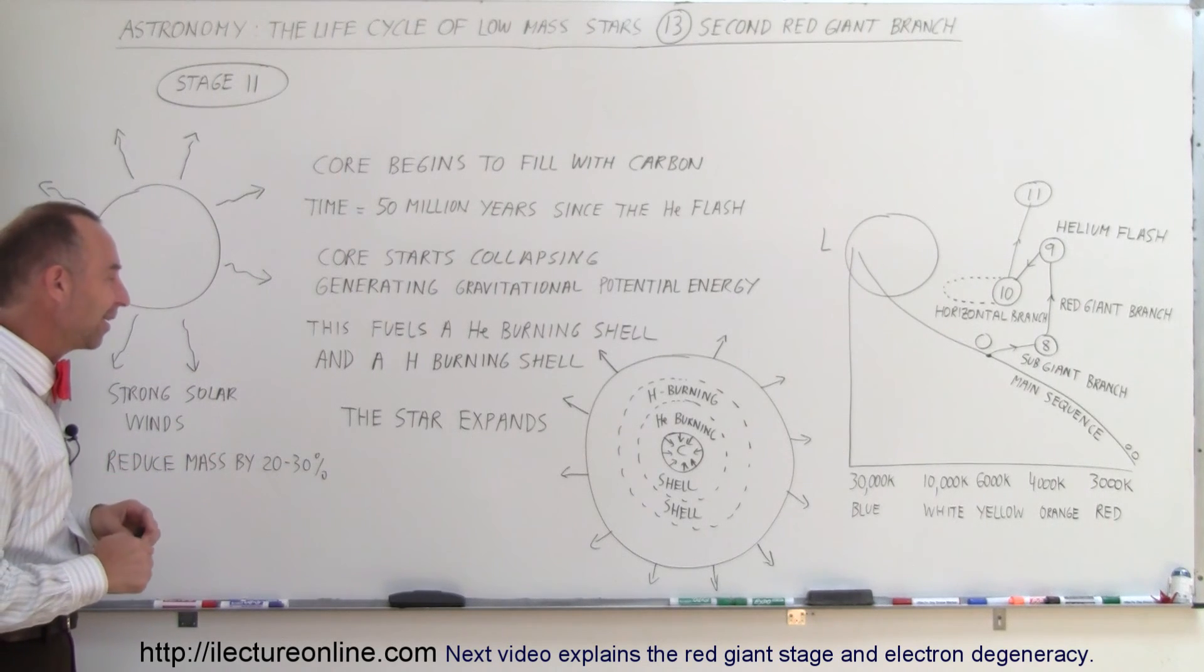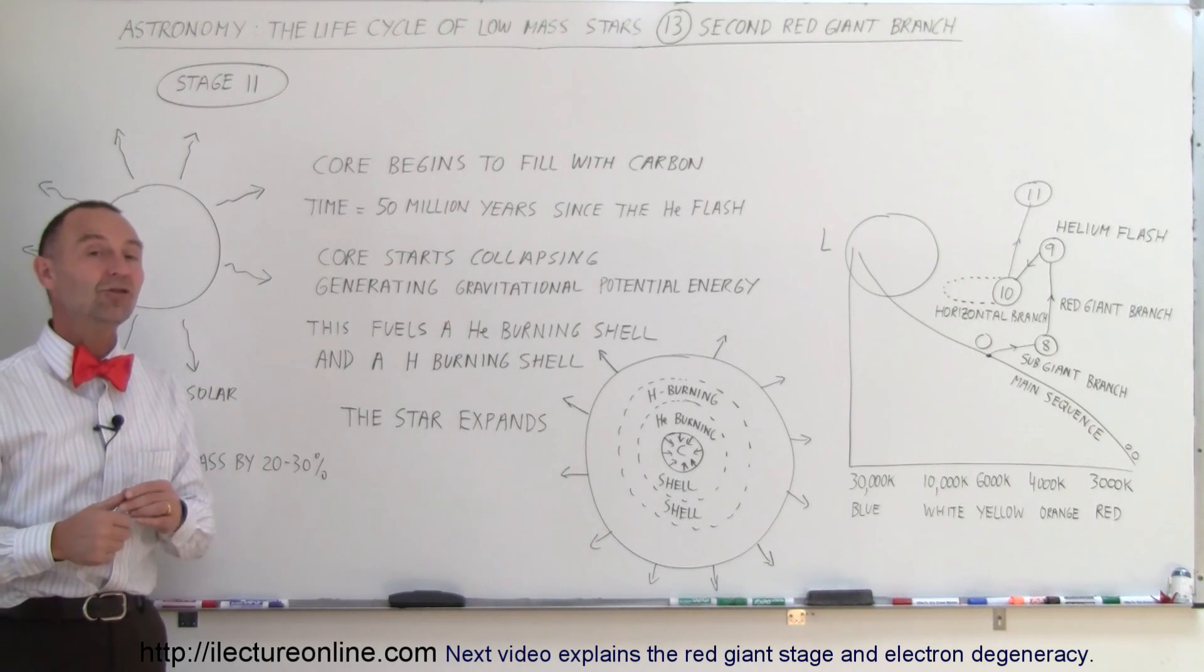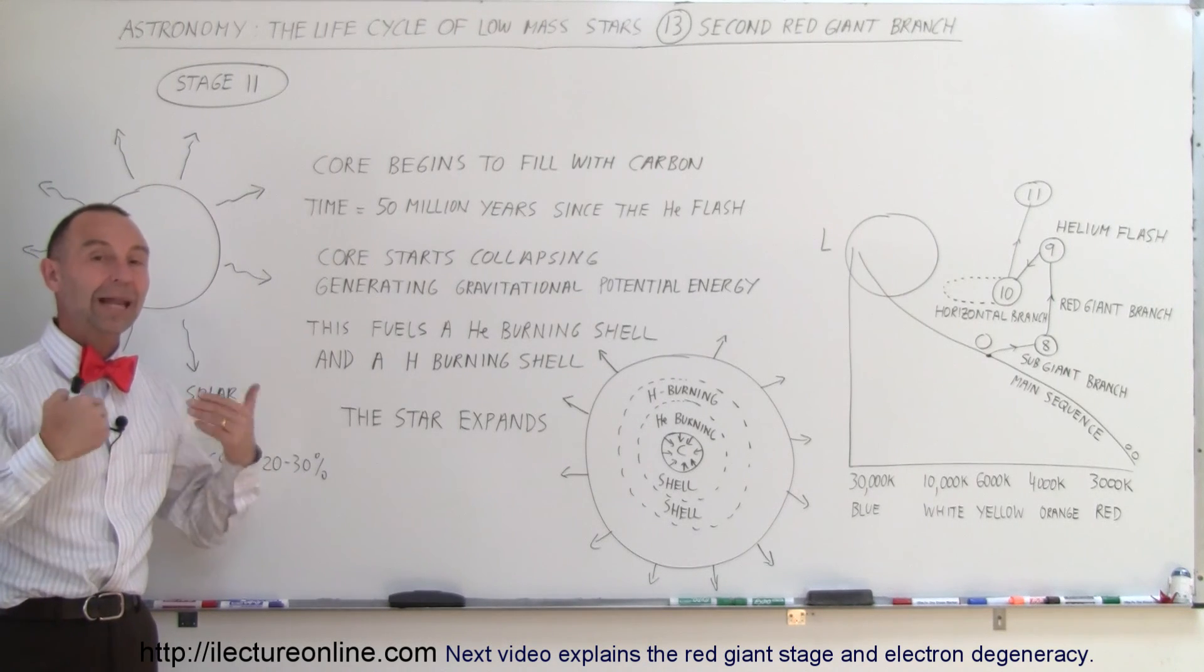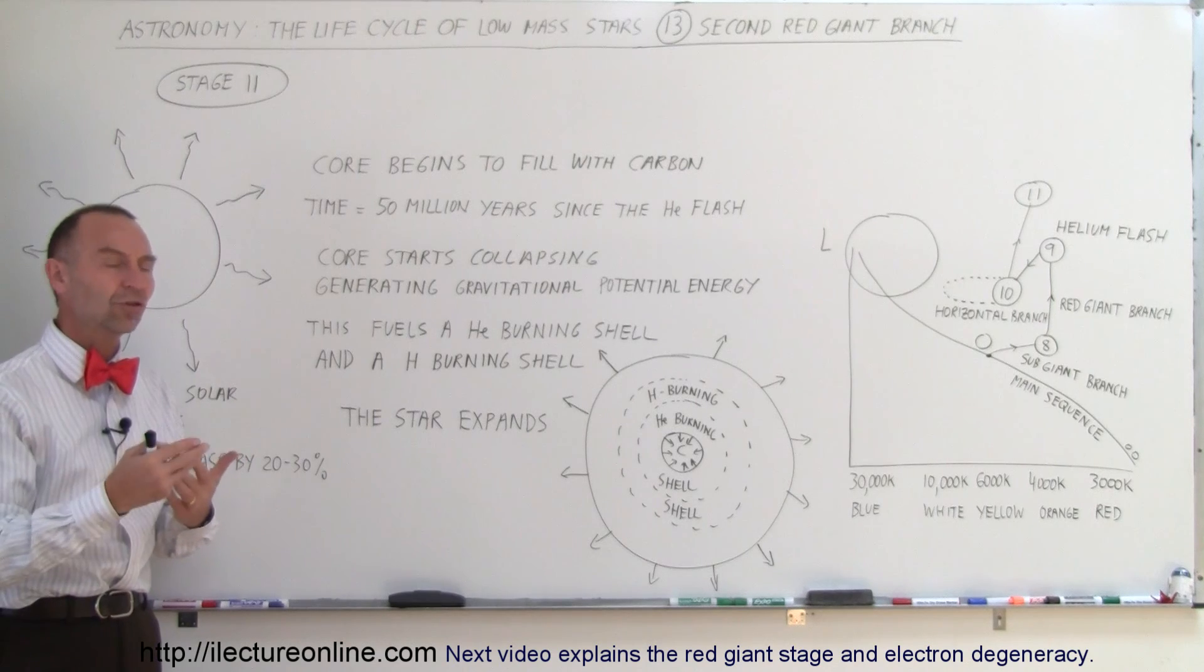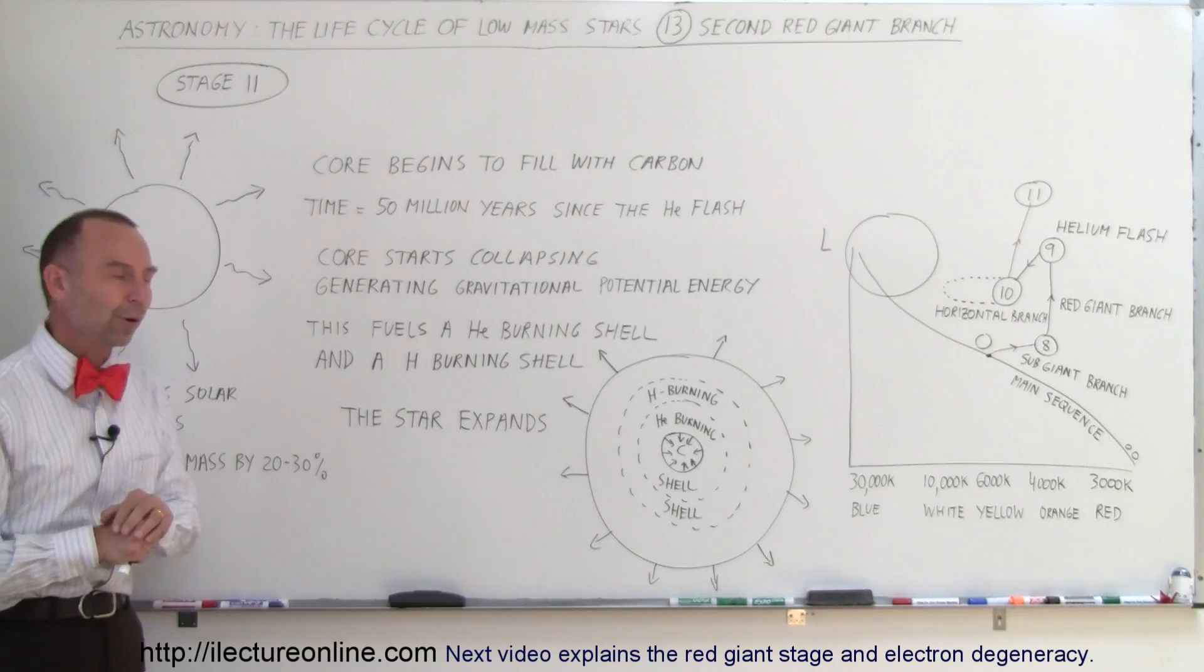That is what we call the second red giant branch, and so now we're set up to see what happens at that point. Some very interesting things are going to happen to the star before it comes to its final demise as a white dwarf.